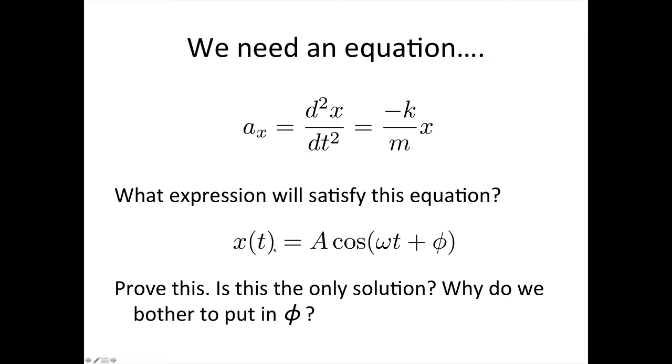So x is equal to A cos omega t plus phi is a possible solution. Let's prove that now. OK. So we've got x is equal to A cos omega t plus phi.